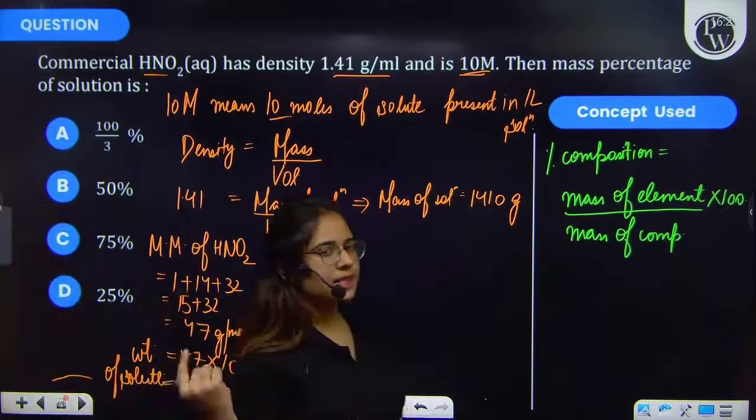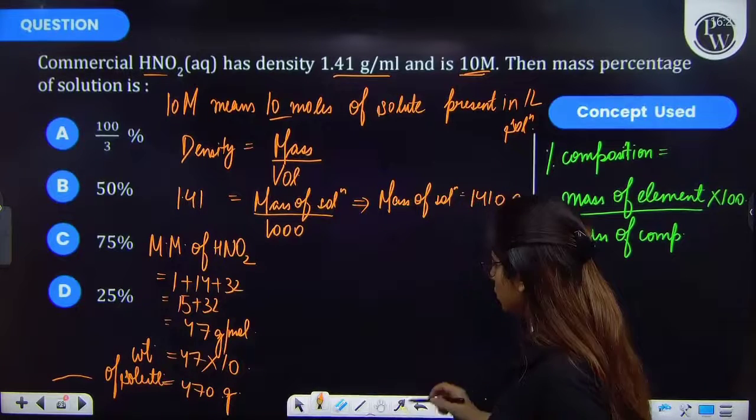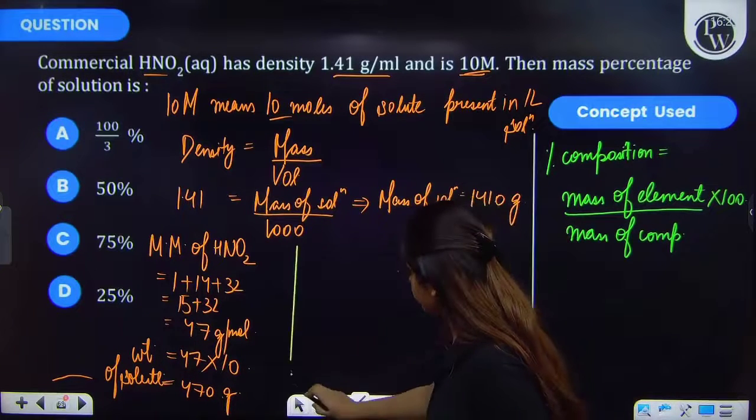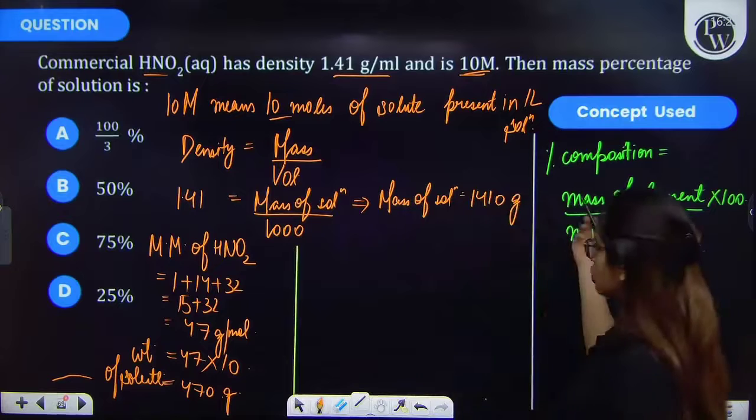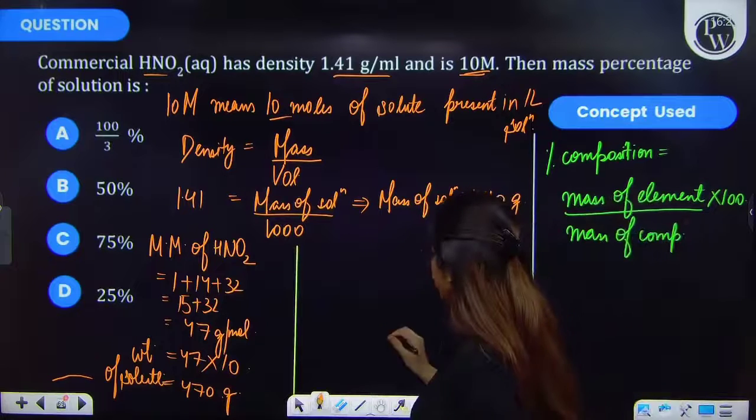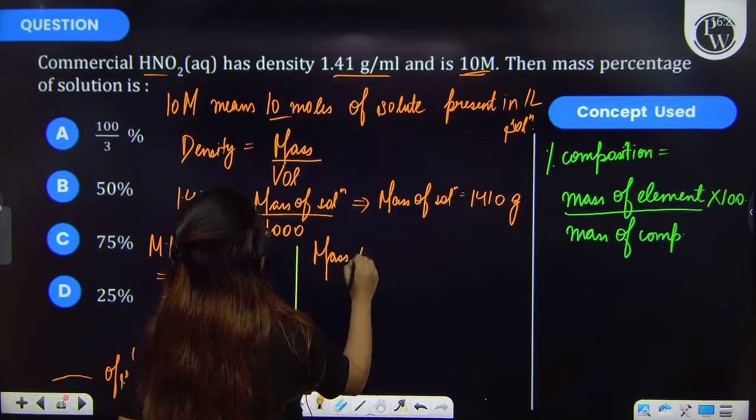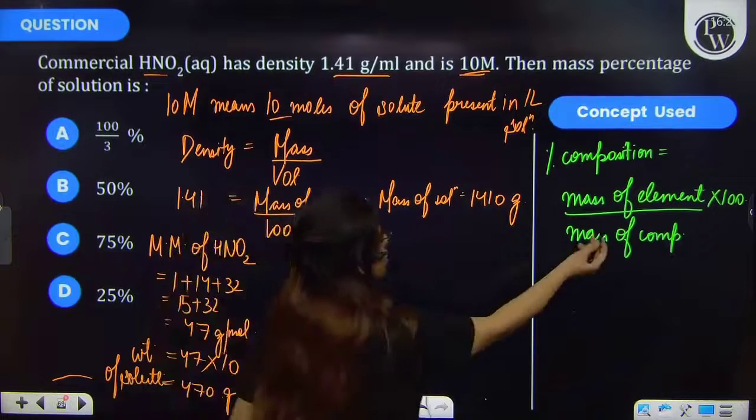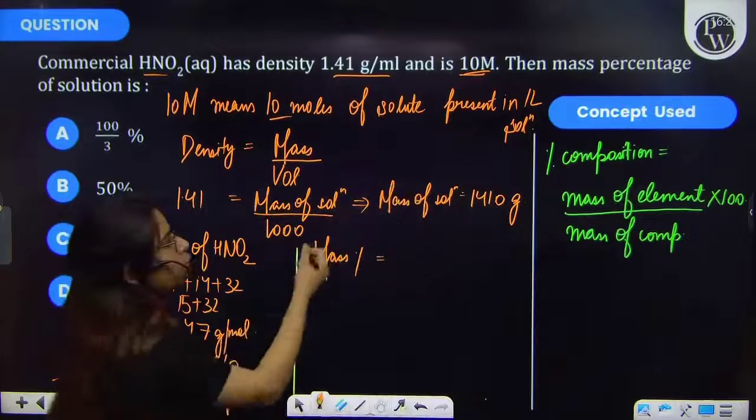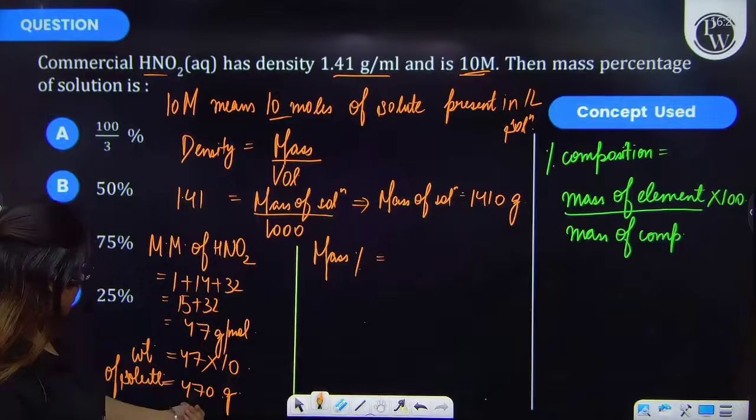Now you have to find the mass percent and for that you have to use this formula, and it will become mass percent equal to mass of this HNO2 present and that is 470 grams.